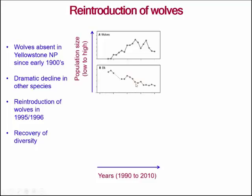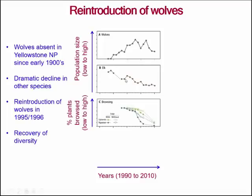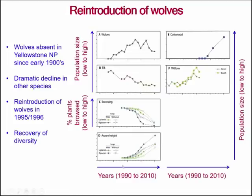That brought down the population of elk significantly. Because elk like to browse — browse meaning the eating of leaves — the decrease in elk populations led to a decrease in the browsing of trees and shrubs, particularly in the riparian regions, which are the regions along the rivers. We see that particularly along the rivers there is an almost zero browsing level. With that we see an increase in tree species — aspen, willow, cottonwood — with a particular increase in the riparian region near the rivers.